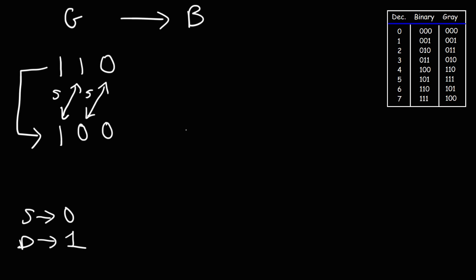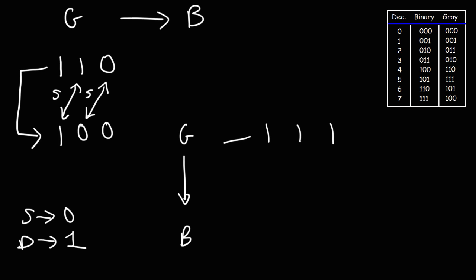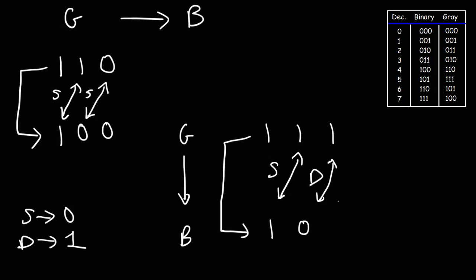Let's try another example — converting gray code to binary. Given the gray code 111, first rewrite the most significant bit: 1. Then compare: 1 and 1 are the same, so we write 0. Then 0 and 1 are different, so we put 1. So gray code 111 corresponds to binary code 101.